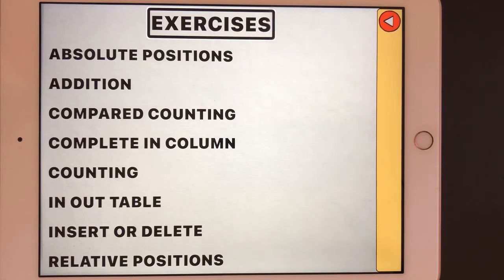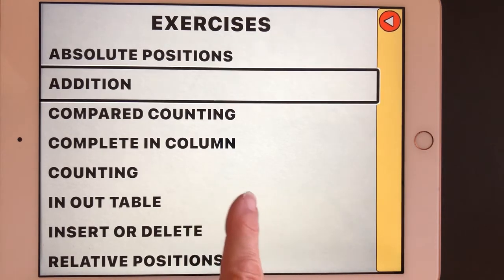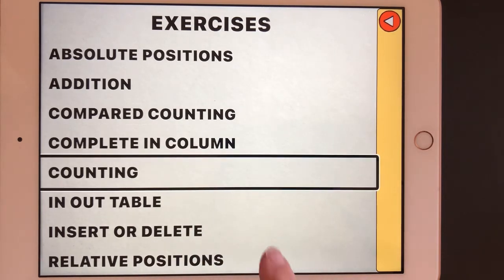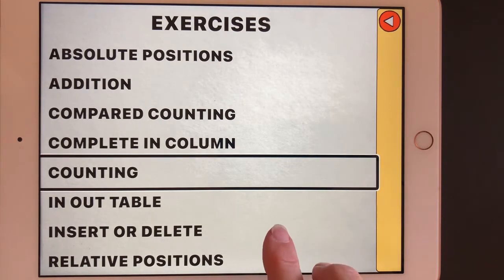Exercises page. I'm going to go down on this page. There's a number of different games available. I'm going to go down to counting. Let's right swipe until we get to the counting games. Absolute positions, addition, compared counting, complete in column, counting. This is one of the most basic games. I'm going to double tap or drag and split tap to open it.